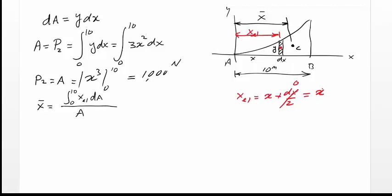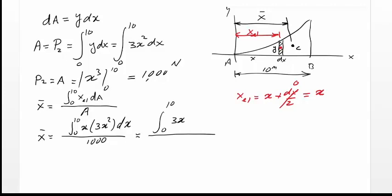Notice y of element, in case we need it, is not equal to y, it is y over 2. Therefore, our equation becomes x bar equal to integral of 0 to 10, x times dA. dA is already y dx, or equal to 3x square dx, divided by 1000, which is the area, or equal to integral of 0 to 10, 3x to the power of 3 dx, divided by 1000, or equal to 3 over 1000, x to the fourth over 4, to be evaluated between 0 to 10 meters. The result becomes 7.5 meters.